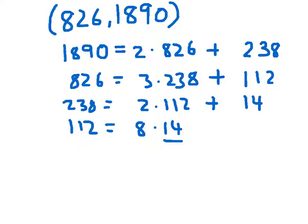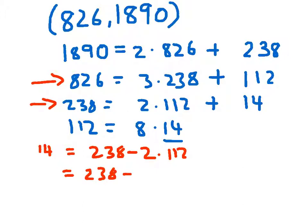Now working backwards, I'll do this in a different color. Working backwards we get that 14, this is from this line here, 14 equals 238 minus 2 times 112. From this line here, 112 equals 826 minus 3 times 238.